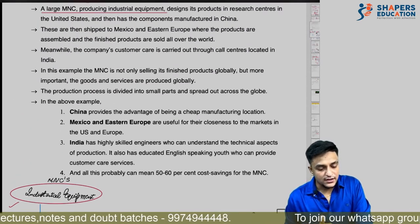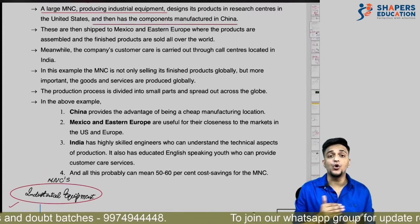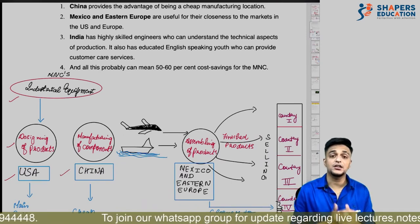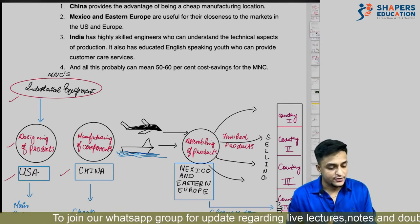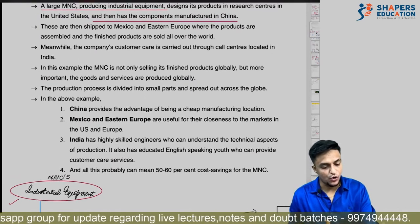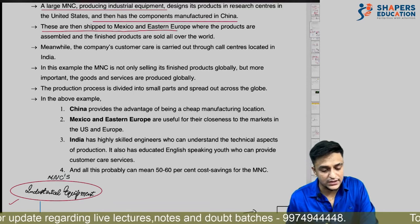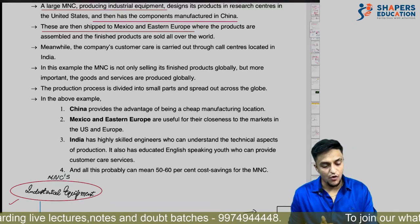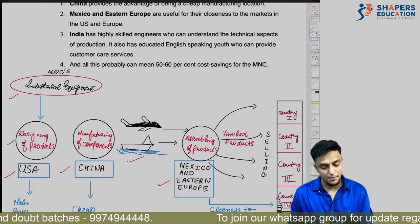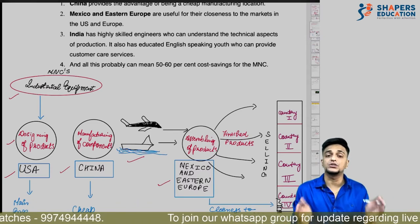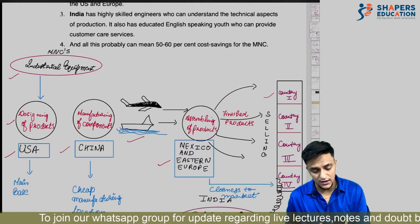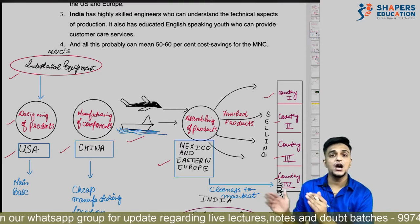Then the components are manufactured in China. So the work is divided: designing of products is done in the USA, components are manufactured in China. These components are then shipped to Mexico and Eastern Europe, where they are assembled. The finished goods are then sent to different countries for selling purposes.